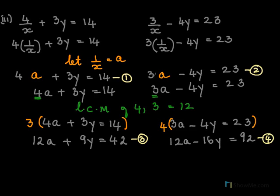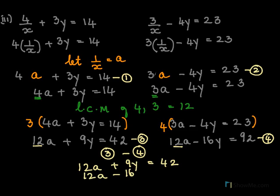Now these equations, the coefficients have been made equal. This is 12 and this is also 12. So the equations are ready for subtraction. So 3 minus 4. So write 12a plus 9y equals 42, here 12a minus 16y equals 92.